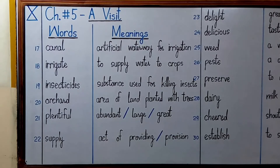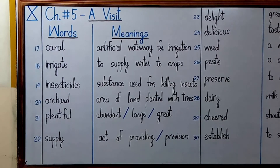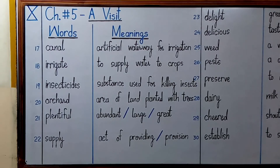Number nineteen is 'insecticides' — a substance used for killing insects, specifically such insects that destroy crops. Number twenty is 'orchard', which means an area of land planted with trees. Number twenty-one is 'plentiful', which means abundant, large, or great.